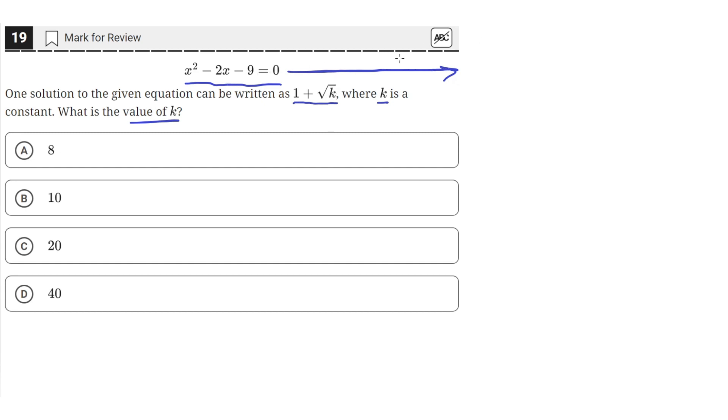So we can solve this by using the quadratic formula. The quadratic formula states that x is equal to negative b plus or minus the square root of b squared minus 4ac all over 2a.